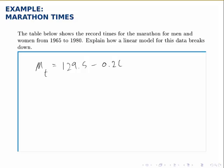Notice that the growth rate, D, is negative because it's decreasing over time. The times are getting shorter and the women's model looks like this.